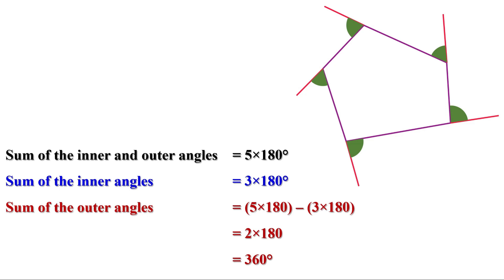We have seen that the sum of the outer angles of a triangle is 360 degrees, the sum of the outer angles of a quadrilateral is 360 degrees, and the sum of the outer angles of a pentagon is 360 degrees. Is it true for all polygons? Let us check.